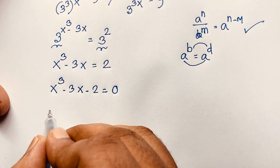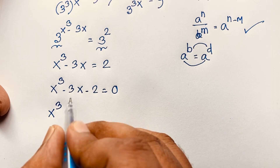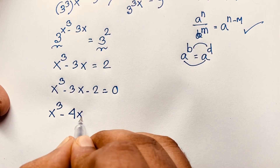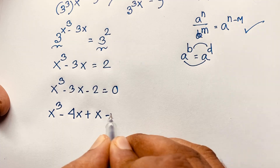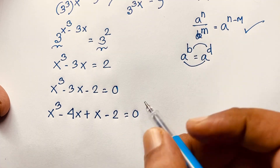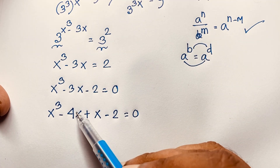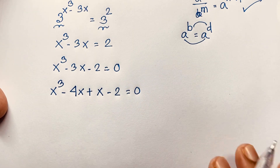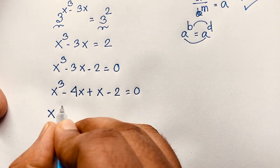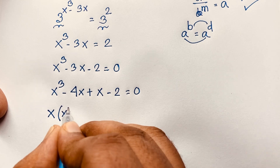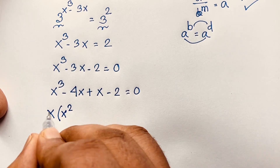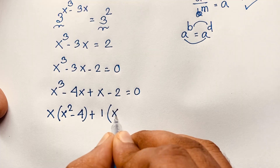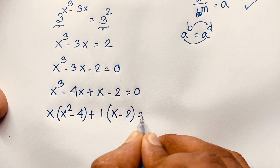Now here is x cubed minus 3x. I split negative 3x into negative 4x plus x, and bring negative 2 over, giving x cubed minus 4x plus x minus 2 equals 0. Notice that negative 4x plus x gives negative 3x, which checks out. Now x is common in the first two terms: x squared minus 4, and 1 is common in the last two terms: x minus 2 equals 0.